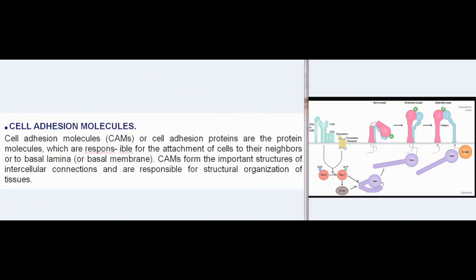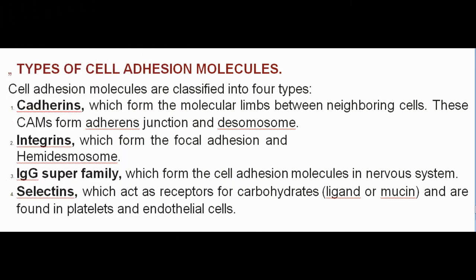Cell Adhesion Molecules (CAMs), or cell adhesion proteins, are protein molecules responsible for the attachment of cells to their neighbors, basal lamina, or basal membrane. CAMs form important structures of intercellular connections and are responsible for the structural organization of tissues. Types: cadherins (form adherence junctions and desmosomes); integrins (form focal adhesions and hemidesmosomes); IgG superfamily (form cell adhesion molecules in the nervous system); and selectins (act as receptors for carbohydrates/ligands or mucins, and are found in platelets and endothelial cells).